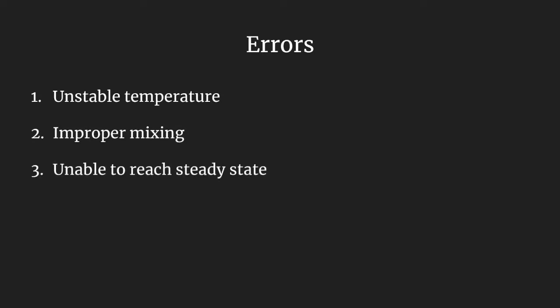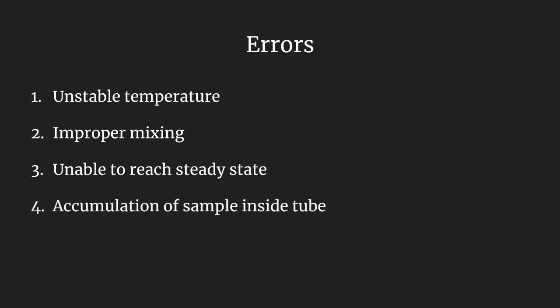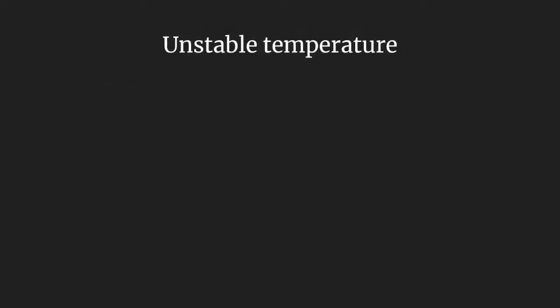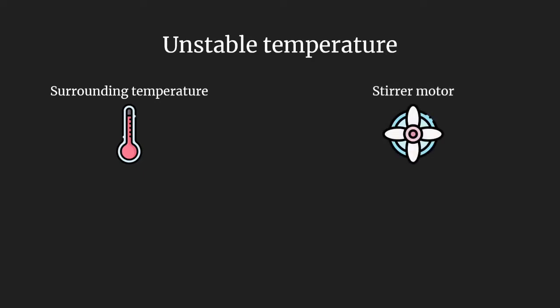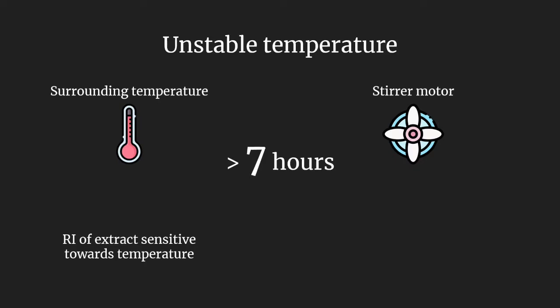In this single-stage mixer-settler experiment, some errors occurred such as unstable temperature, improper mixing, inability to reach steady state, accumulation of sample in the tube, and inconsistent flow rate that affected the analytical results. First, the unstable temperature was due to the surrounding temperature and the heat generated by the stirrer motor, which had been operating for more than 7 hours. The heat generated in the motor will affect the mixing, because the motor is directly in contact with the feed and solvent. The refractive index of the sample is very sensitive towards temperature, especially the extract.